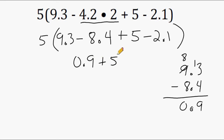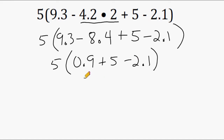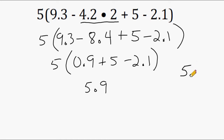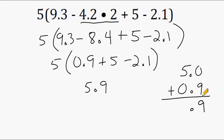We still have to add 5 to that and then subtract 2.1 from that, and we have to multiply the final result by 5. Next, take 0.9 and add 5 to it — that should be mental math. 5 plus 0 is 5 whole numbers, and 0 tenths plus 9 tenths is 9 tenths, so the result is 5.9. For those who want to write it out: write 5 as 5.0, add 0.9, drop the decimal straight down, add 9 tenths and 5 whole, giving 5.9.